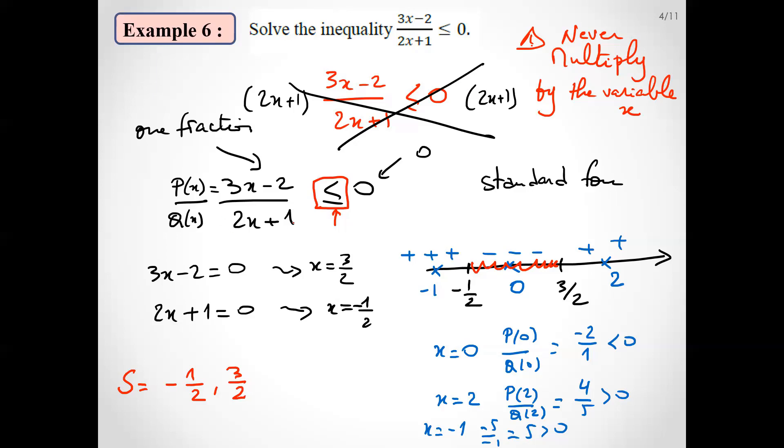But be careful, no division by zero. When Q(x) equals zero, this must be excluded from the solution set. At minus half we have to open always. The solution set is half closed or half open. Since in the denominator, x must be different from minus half.